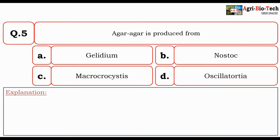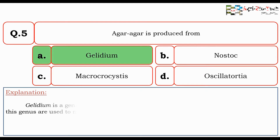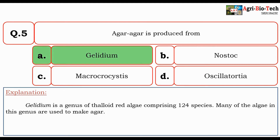Next question: Agar-agar is produced from — Gelidium, Nostoc, Macrocystis, or Oscillatoria? The correct answer is Gelidium. Gelidium is a genus of thaloid red algae comprising 124 species, and many of the algae in this genus are used to make agar.